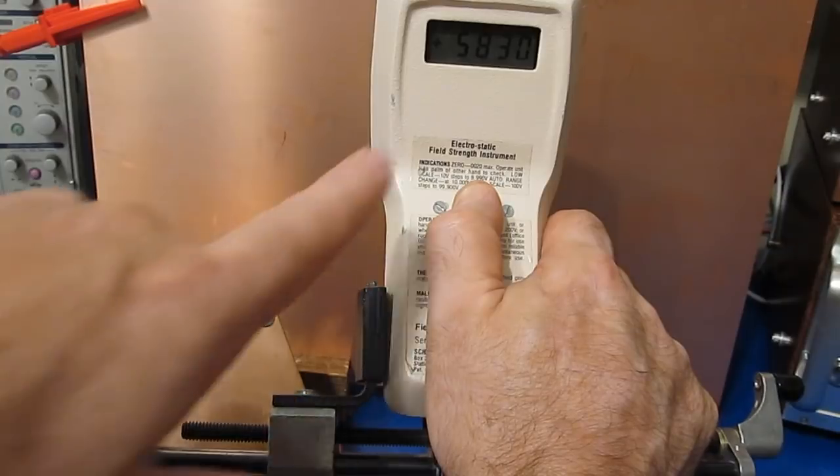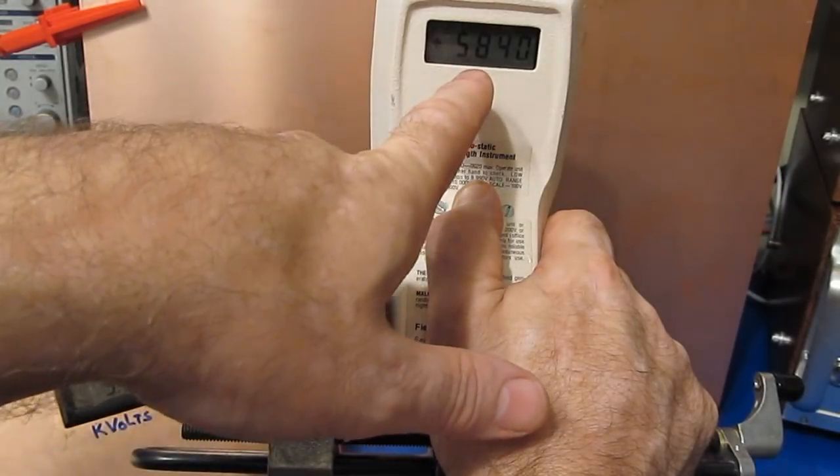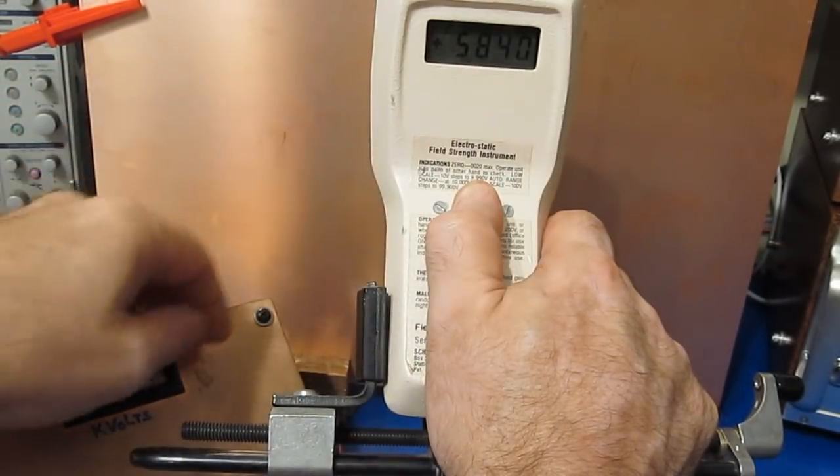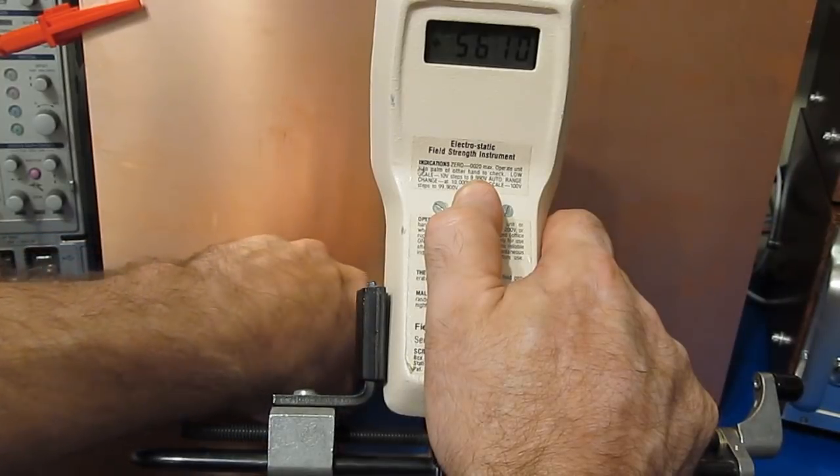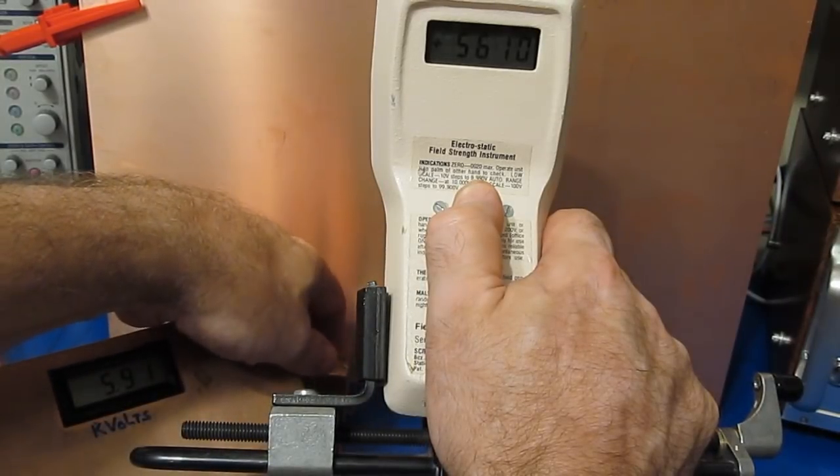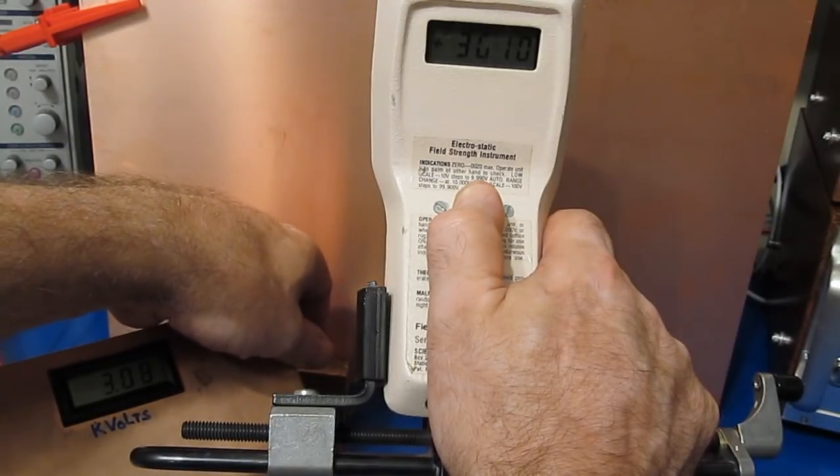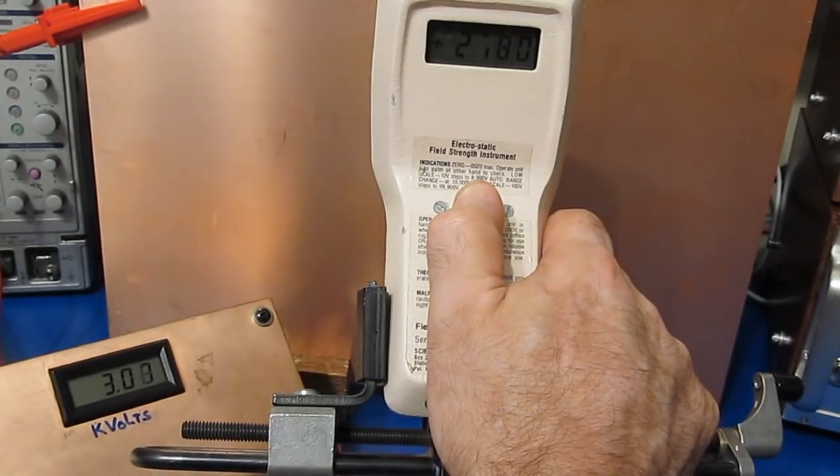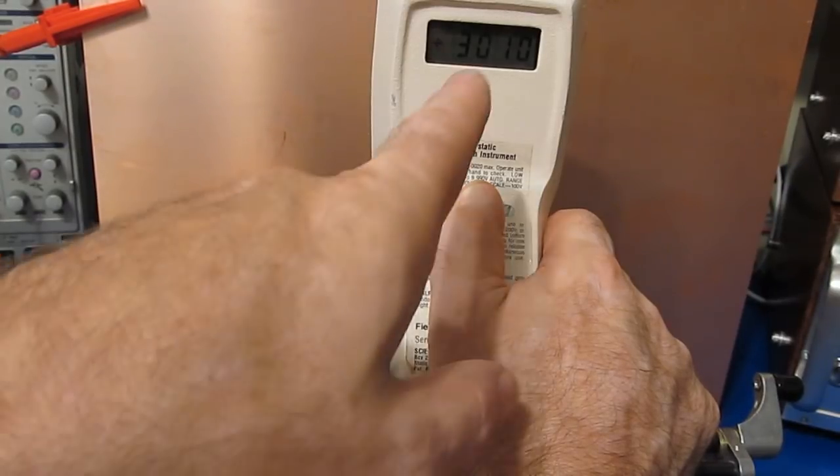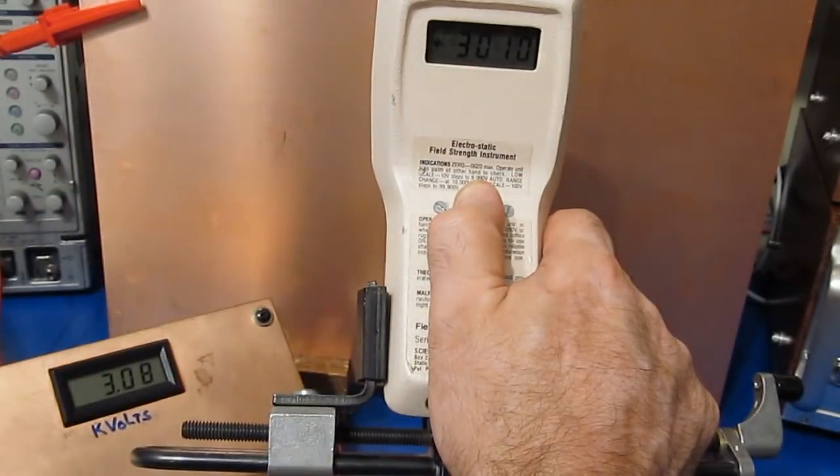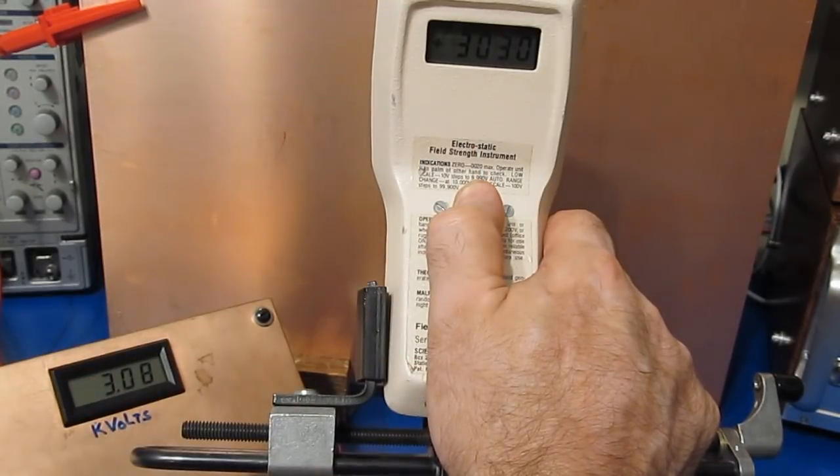You can see now we're outputting roughly 5900 volts, and you can see the display here is reading 5840. Again, let me just go ahead and adjust this down.